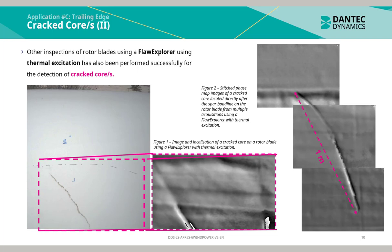In Figure 1, we see an image and localization of a cracked core on a rotor blade using a floor explorer with thermal excitation, and similarly in Figure 2.